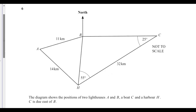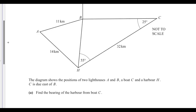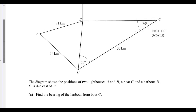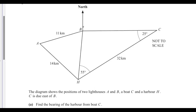Question 6. The diagram shows the positions of two lighthouses, A and B, a boat C, and a harbor. C is due east of B, so that means angle B is 90 degrees. That's the implication.